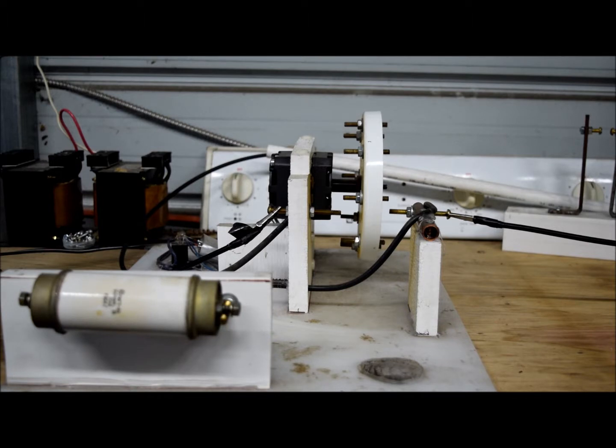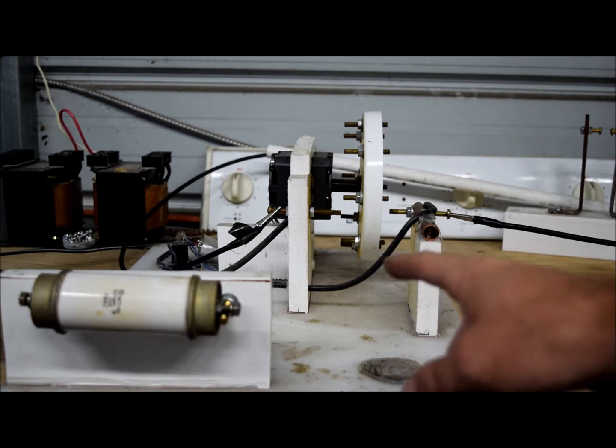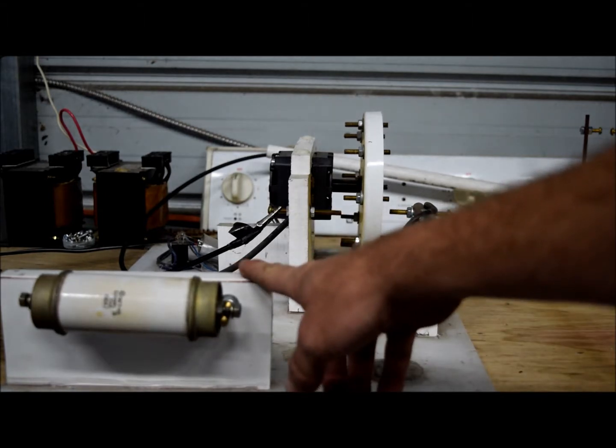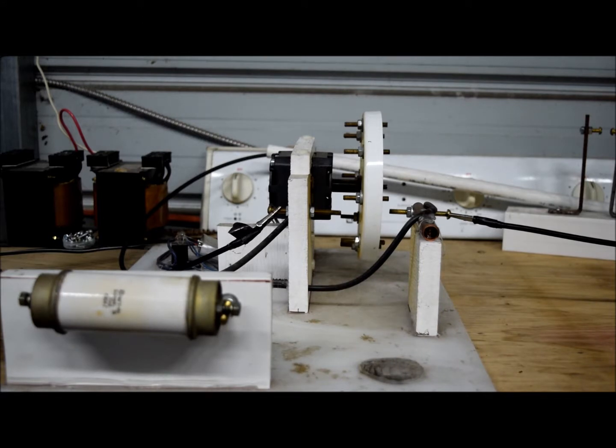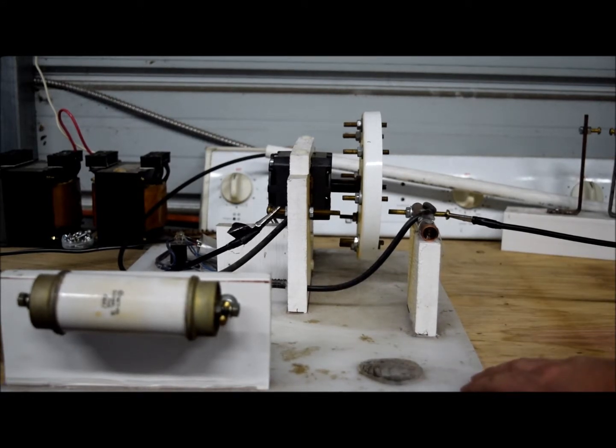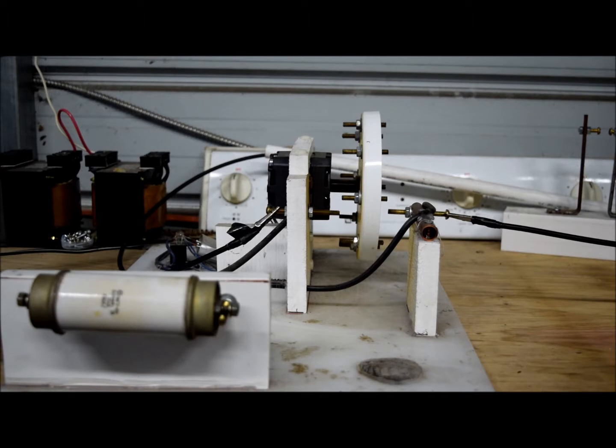Here is one of my spark gaps from my Archangel Tesla coil. I built it off of a cutting board with PVC board 100%, and this is a synchronous rotary spark gap 3600 RPMs. This is one of the things that you need for a spark gap Tesla coil.